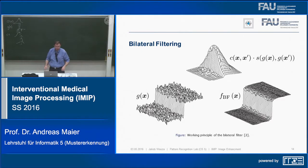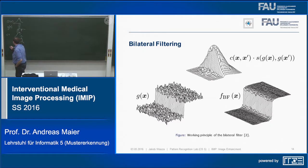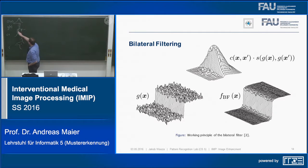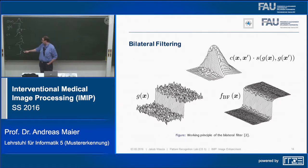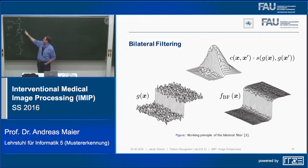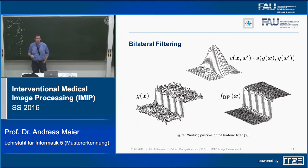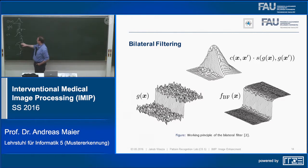To clarify how the kernel is computed: it's the multiplication of c and s. C is the Gaussian in spatial domain, and s is a Gaussian defined in intensity domain — i.e., a function of g(x) − g(x′). For a pixel on one side of an edge, all similar intensities yield high s values; once you cross the edge, intensities differ greatly, s drops to near zero. The final kernel is just the product of these two Gaussians.